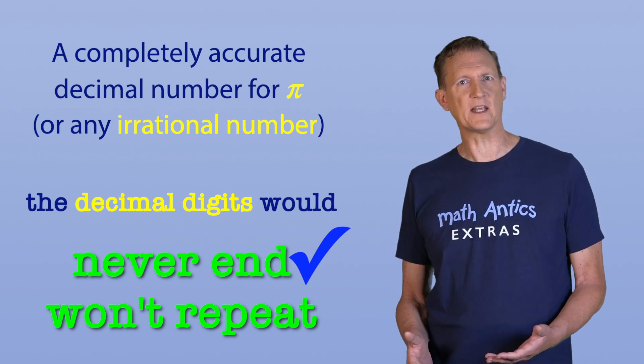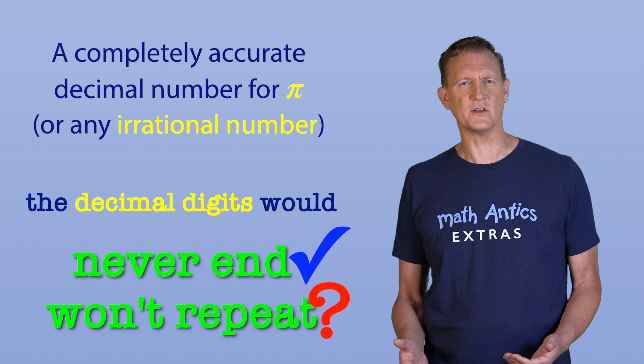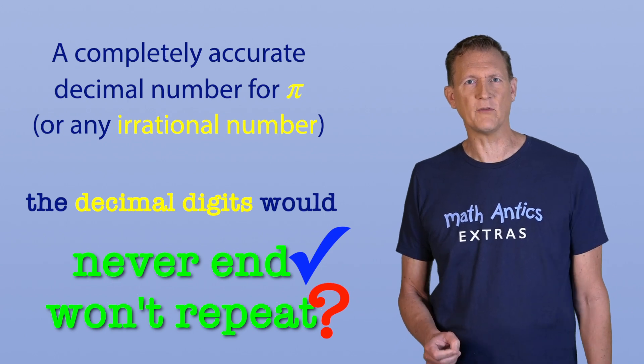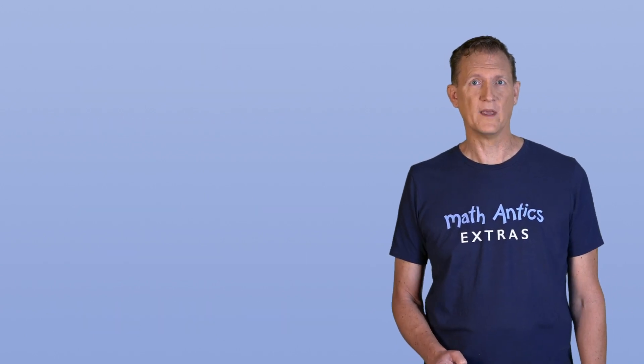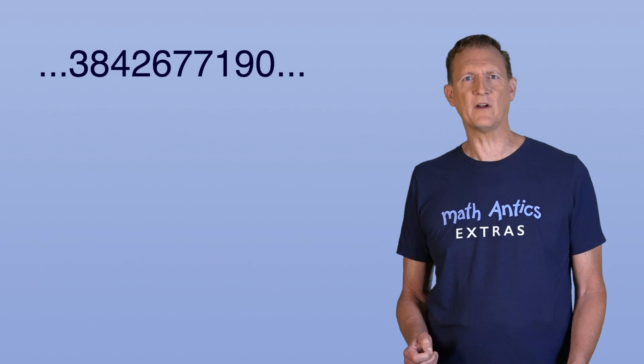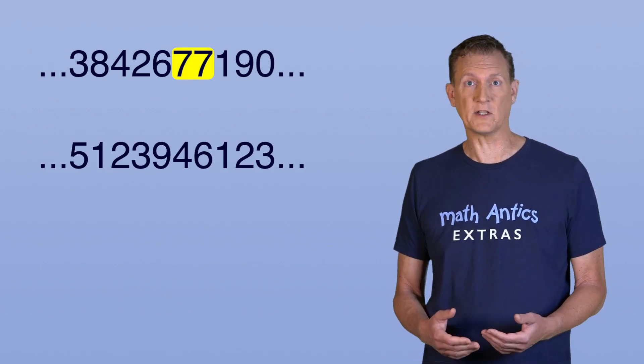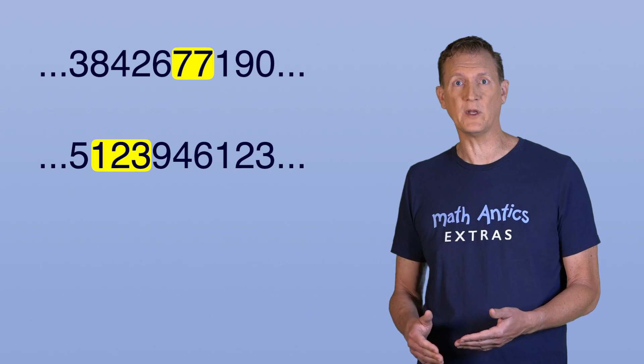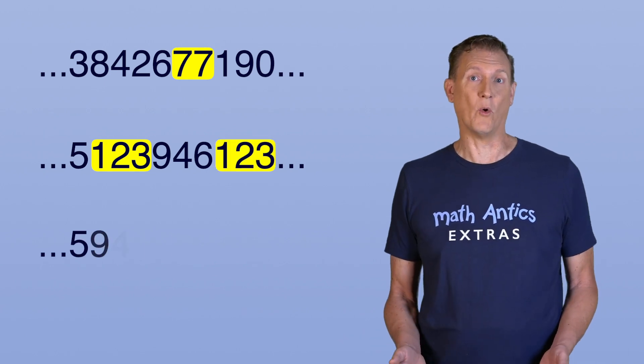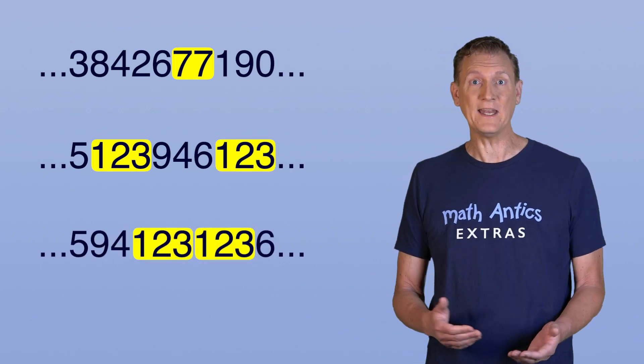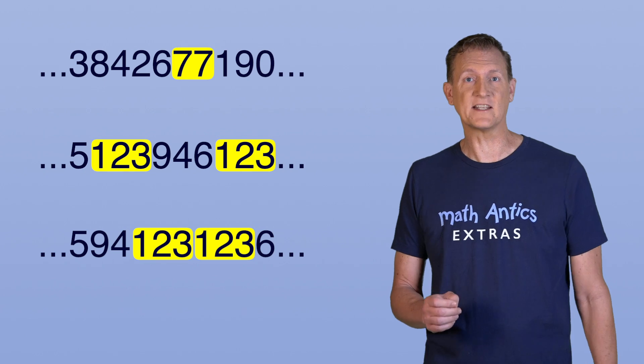But the statement that the decimal digits won't repeat might be hard to understand. It might even make you think something that's not true. You might think it means that you can never have two of the same digit next to each other, or you might think that a particular pattern of digits, like 123, won't appear more than once, or that it at least won't be followed immediately by the same pattern. But that's not what it means.